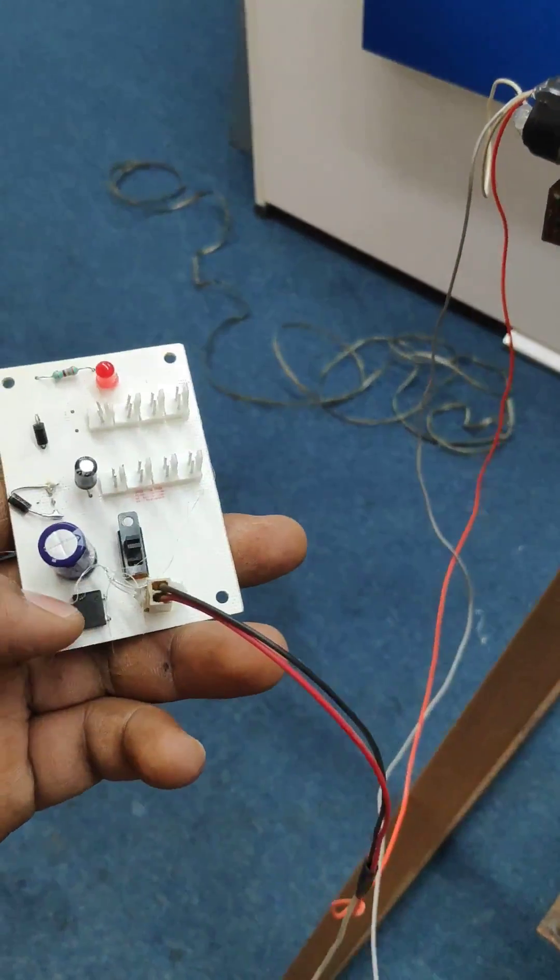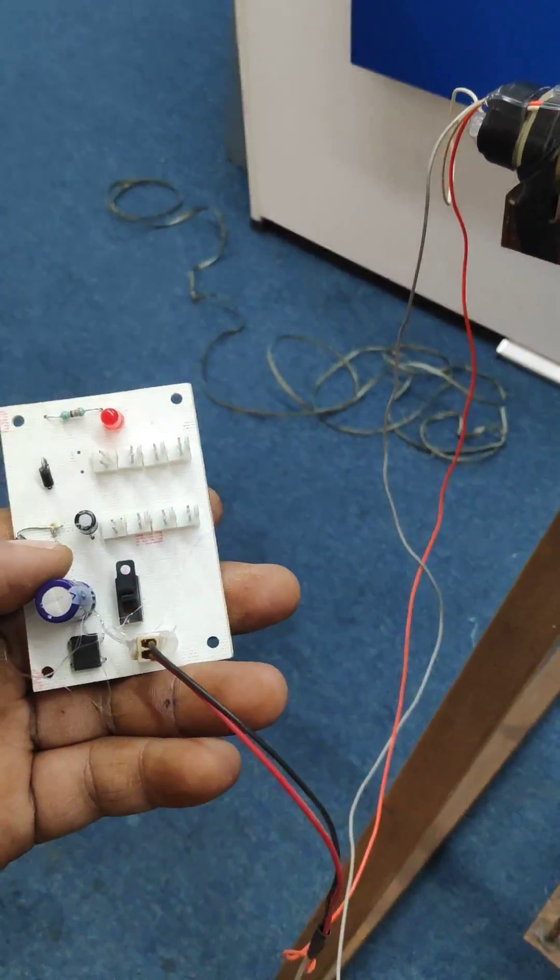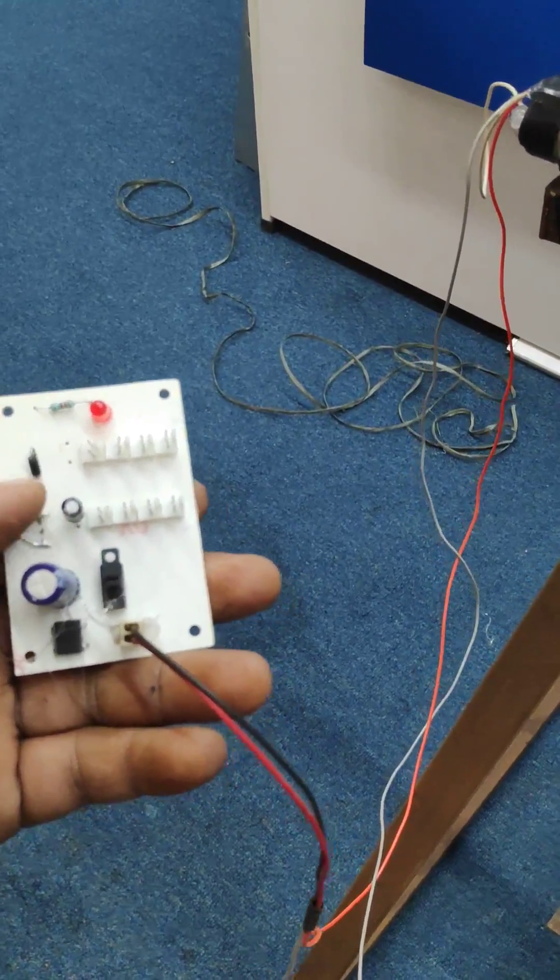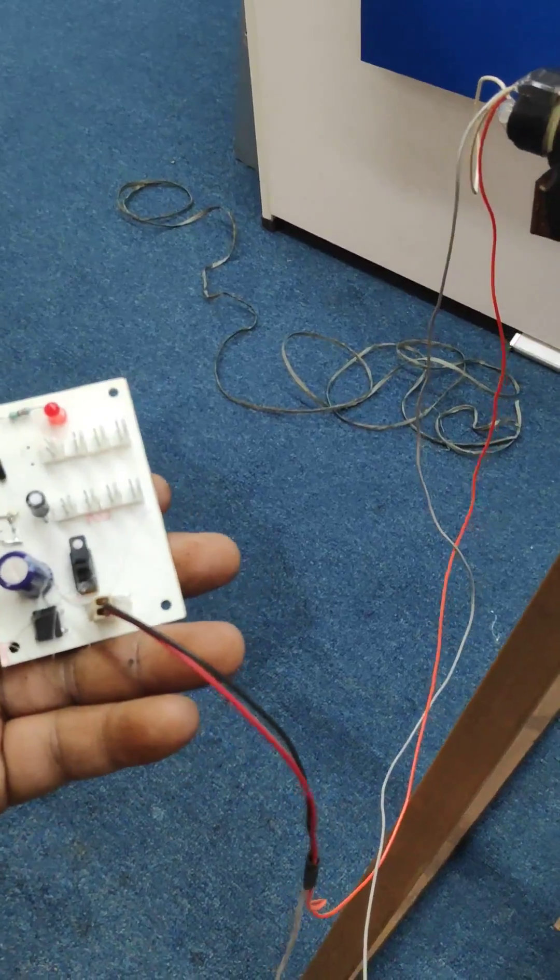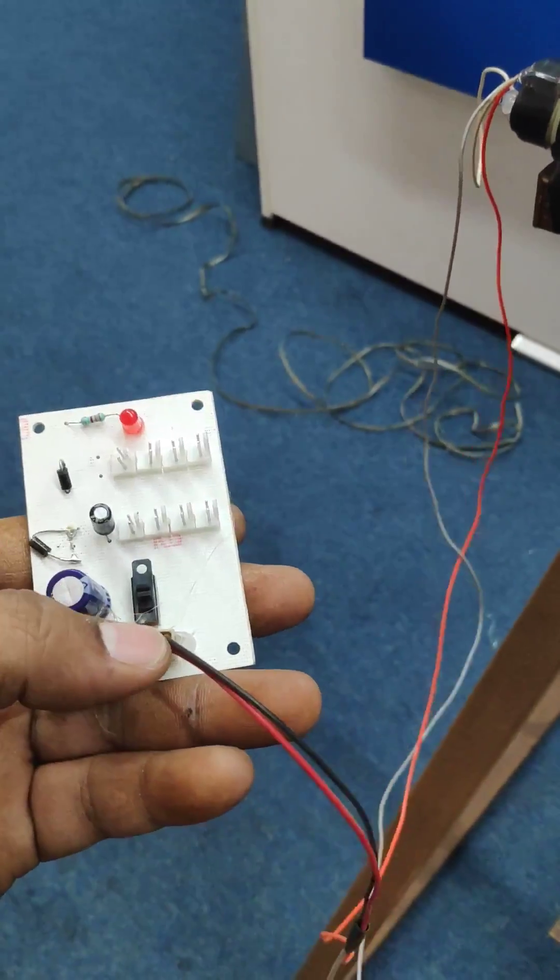Here we have used a DB10 rectifier and 1000 microfarad capacitor. After this, you can get the output voltage coming from the circuit. And here we have used diodes to prevent reverse current into the motors.